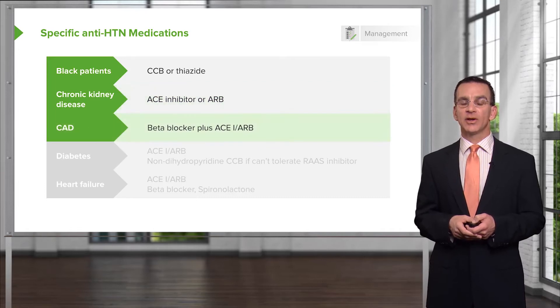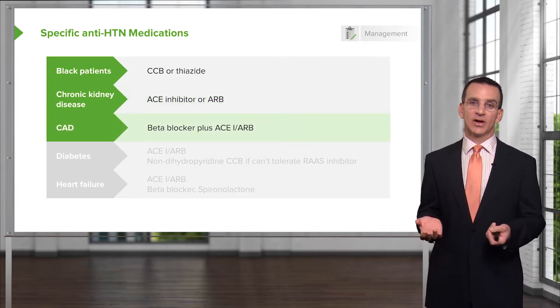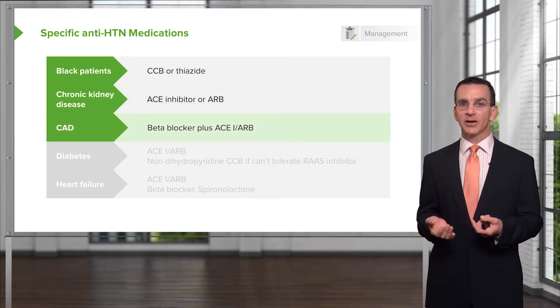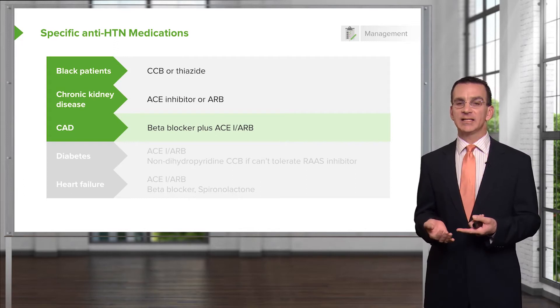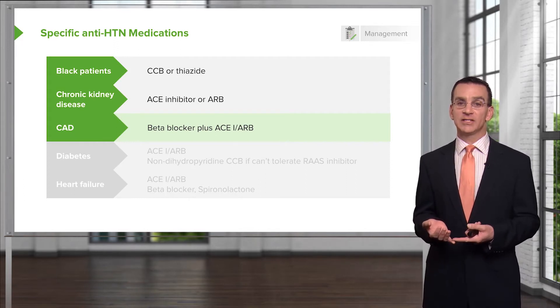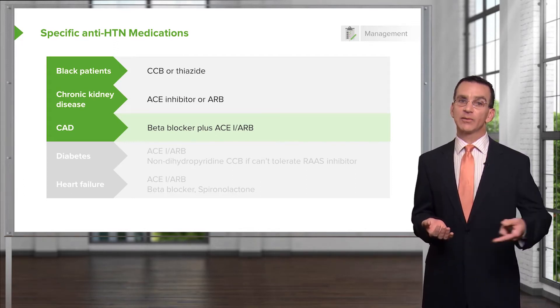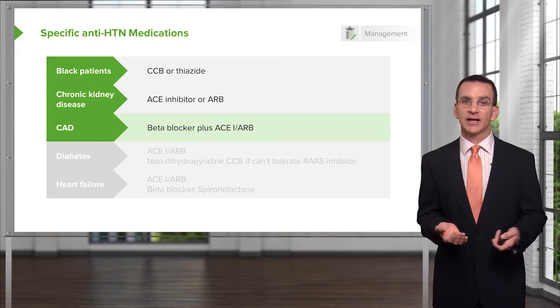Among patients with coronary artery disease, the best drugs are a beta blocker and an ACE inhibitor or an angiotensin receptor blocker for preventing recurrent cardiac events.